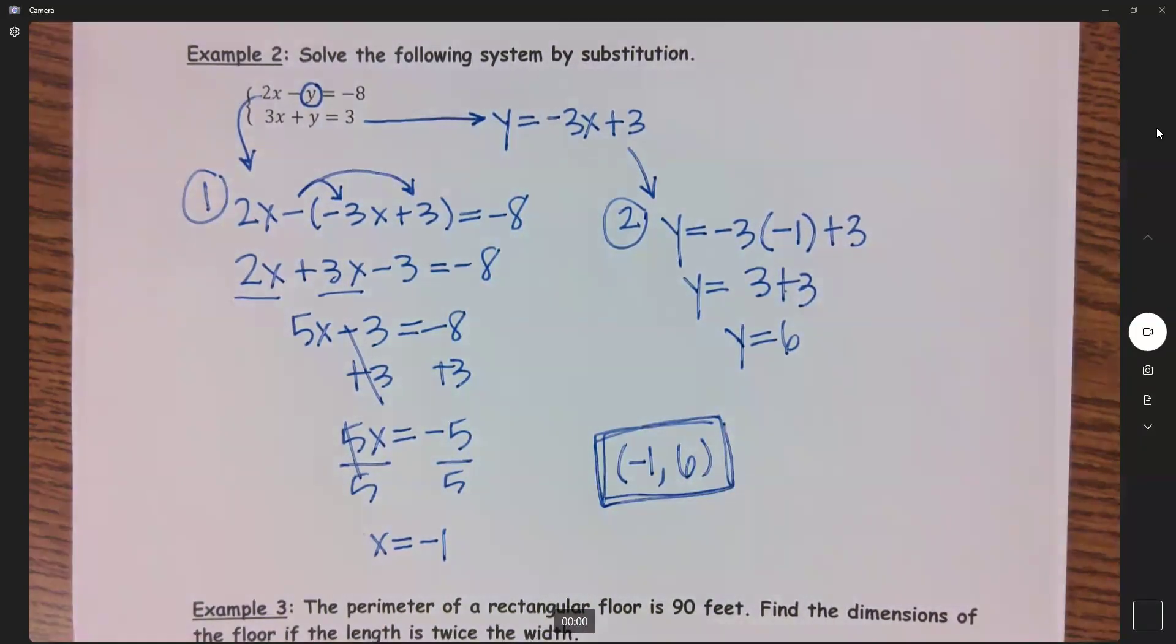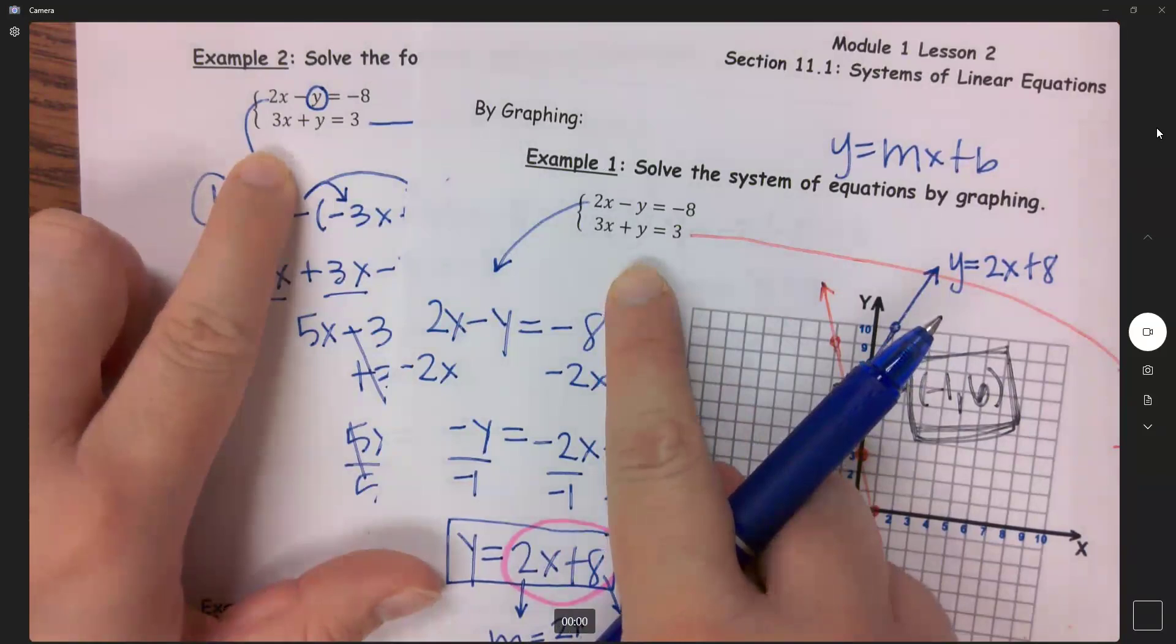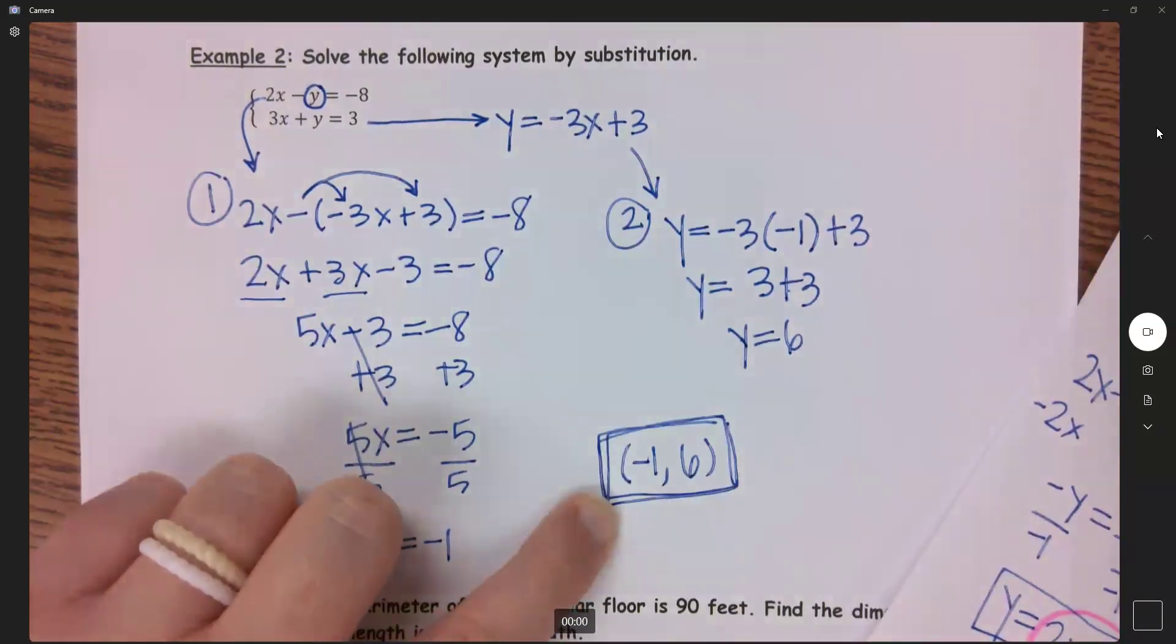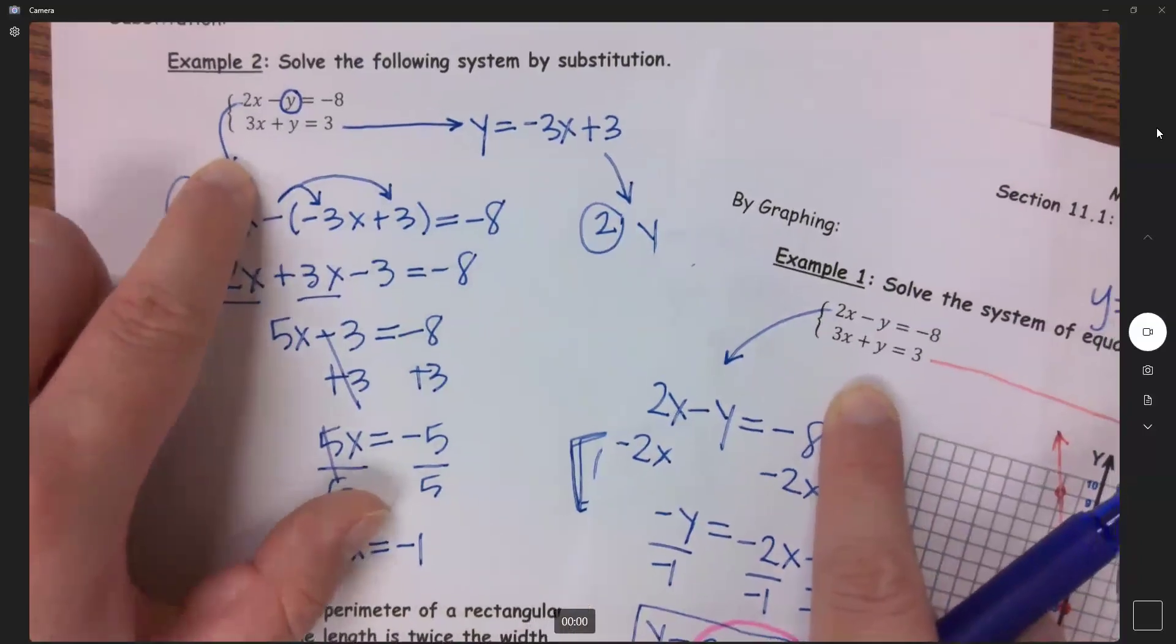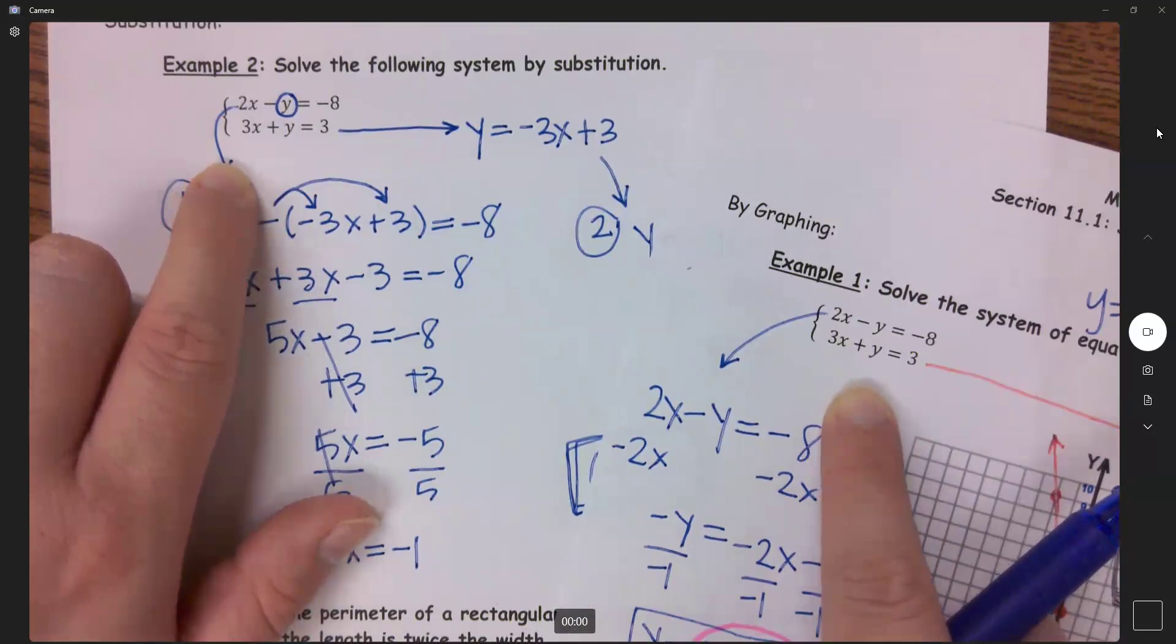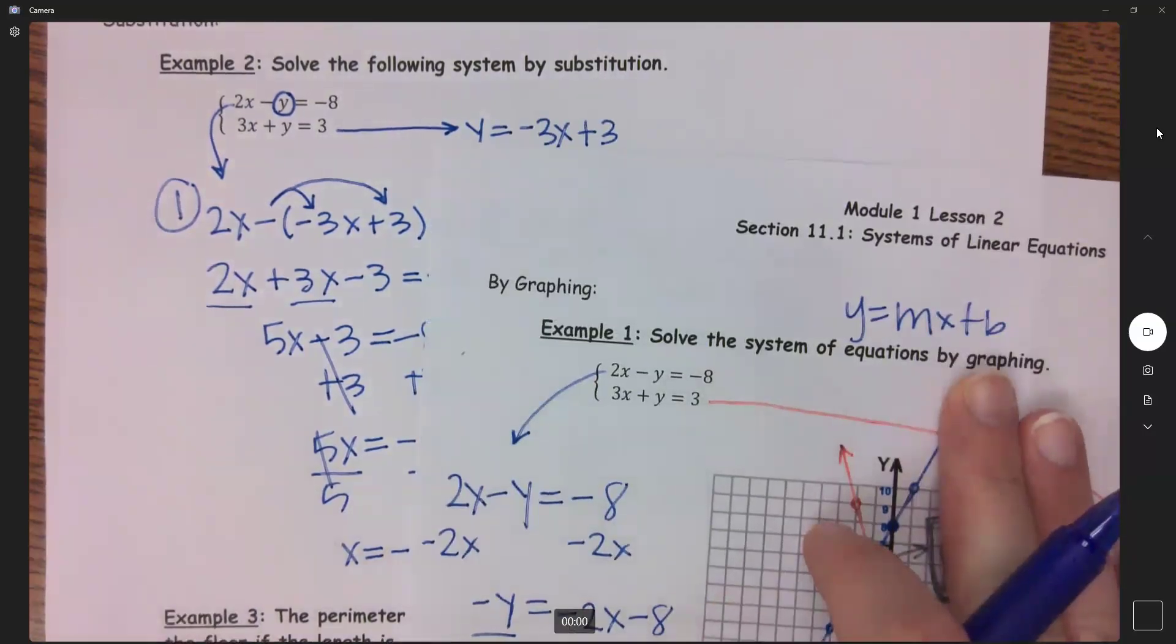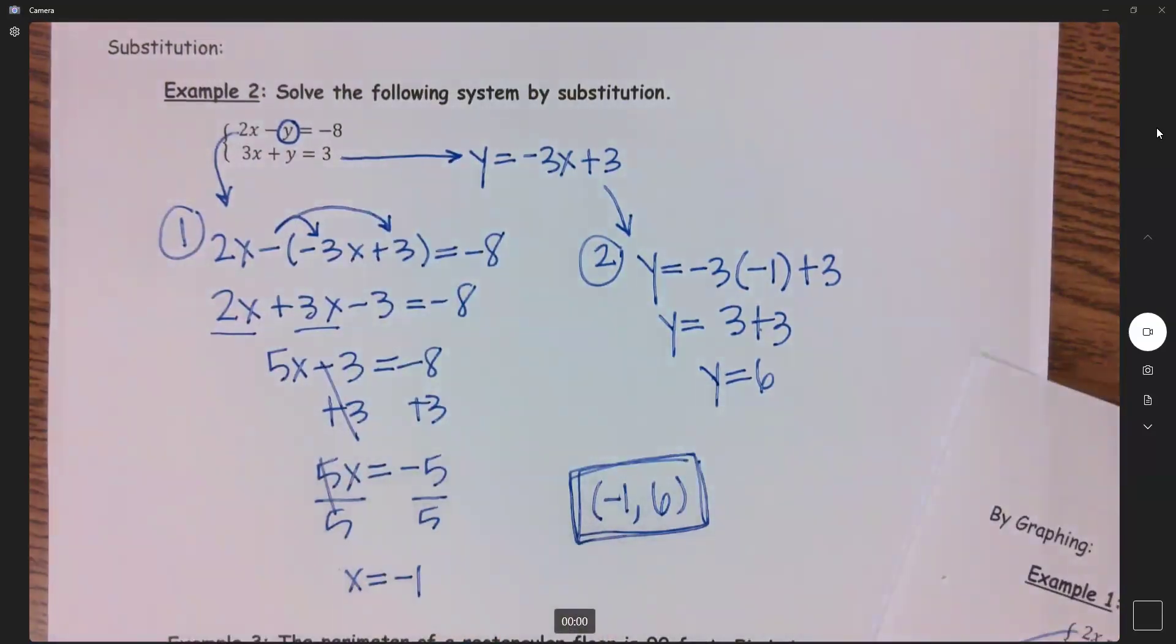And that should look familiar because in our very first example here we solved the exact same thing and when I solved this graphically we got negative 1 comma 6, which is exactly what I got here when I solved by substitution. When I solve these same things using different methods I'm not going to get different results. I'm going to get the exact same answer. It's just different ways to get it. So solving graphically is the same thing as solving by substitution as far as the answer that you're going to get.